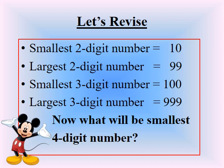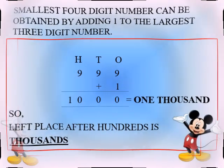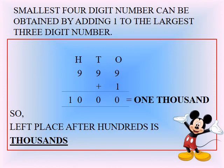Now what will be the smallest four digit number? To get the smallest four digit number, we have to add one to the largest three digit number which is 999. Now look at the slide — after adding one to 999, we get a new number: 1000, which is read as one thousand. So the smallest four digit number is one thousand. We also come to know that the place to the left of hundreds is thousands.